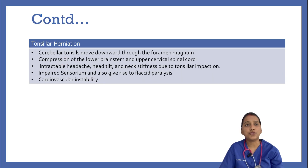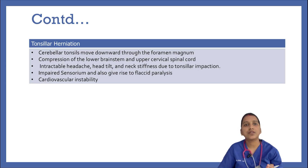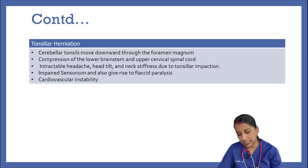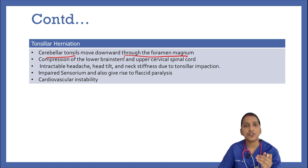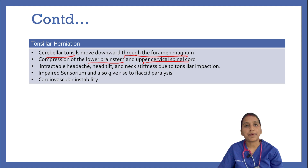Coming to tonsillar herniation, also called downward cerebellar herniation, coning, or transforaminal herniation. The cerebellar tonsils move downward through the foramen magnum, causing compression of the lower brainstem along with the upper cervical spinal cord.